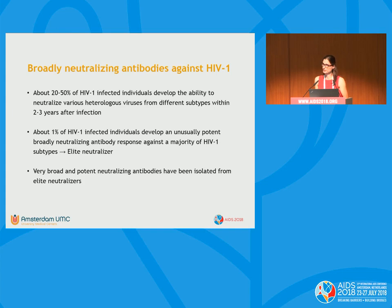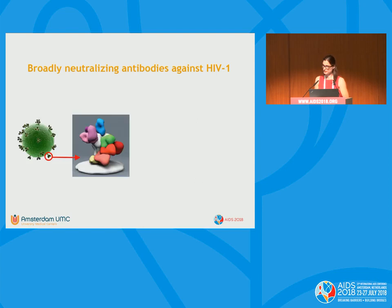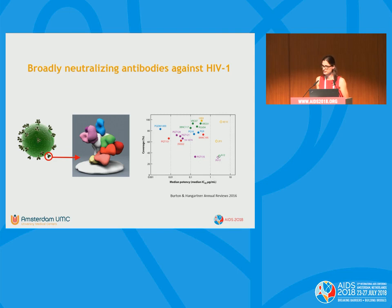Many research groups are investigating and isolating broadly neutralizing antibodies, with elite neutralizers being a key source. These antibodies target the virus by binding to the envelope glycoprotein. Up to about 200 broadly neutralizing antibodies have been isolated so far, and the most potent ones can neutralize up to 80–90% of circulating viruses at very low concentrations.